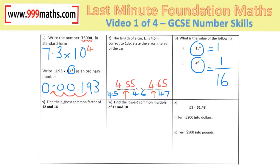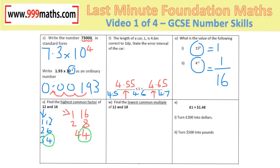The highest common factor can be found using Venn diagrams or by listing. The factors of 12 are 1 and 12, 2 and 6, 3 and 4. The factors of 16 are 1 and 16, 2 and 8, and 4 times itself. The highest common factor — the biggest number in both lists — is 4.